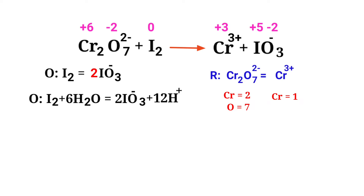Now balance the number of atoms in the reduction half reaction. To balance the chromium atoms, we need to put a coefficient of 2 in front of Cr3+.